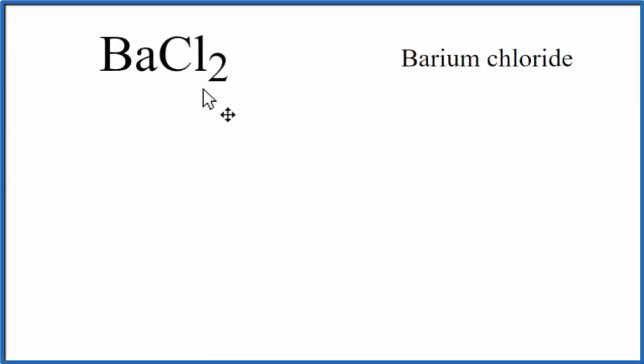To write the Lewis structure for BaCl2, barium chloride, let's first write barium, B-A, and then put a chlorine on either side.